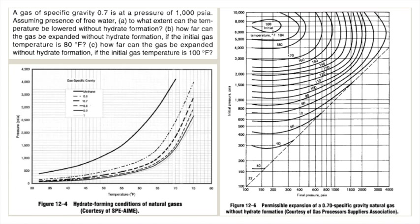For Question 3: how far can the gas be expanded without hydrate formation if the initial gas temperature is 100°F? With an initial pressure of 1000 psi, the 100°F line does not intersect the hydrate formation curve anywhere on the chart. In this case, the gas can be expanded all the way to atmospheric pressure without hydrate formation. These charts are very useful in field situations to determine when hydrate formation conditions are occurring or not.